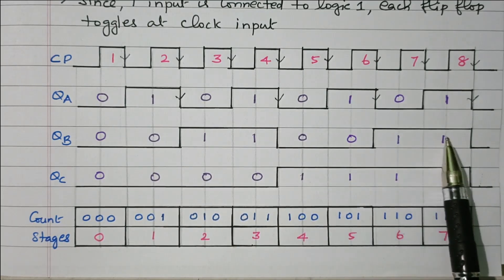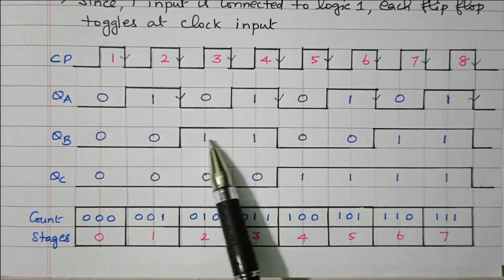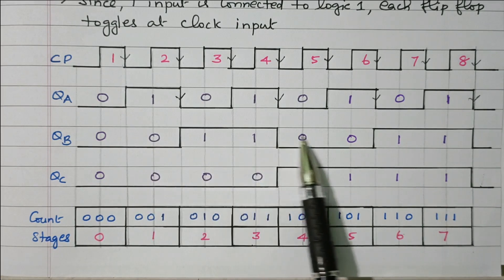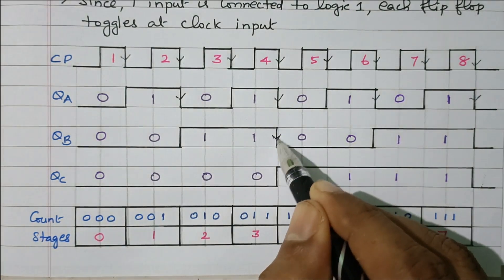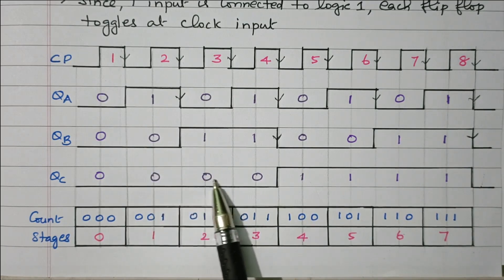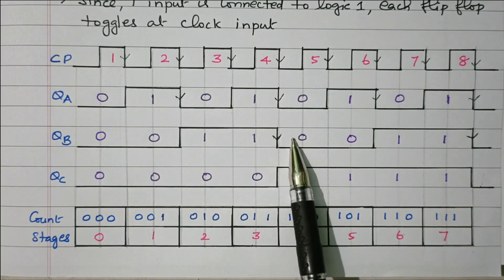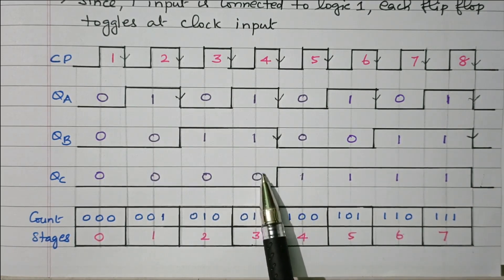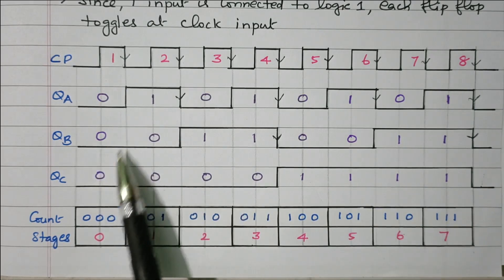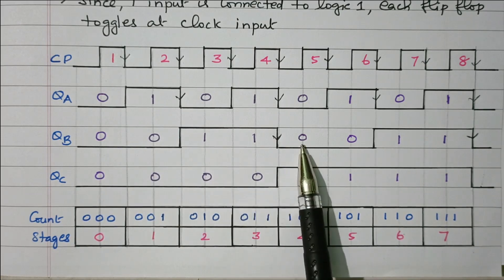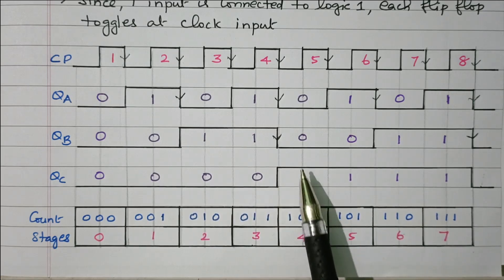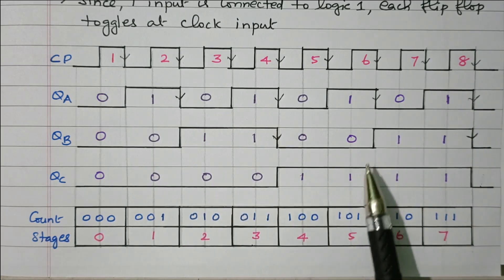During every trailing edge there is a change in QB's state. For the third flip-flop, QB is the clock pulse for QC. During the trailing edge of QB, QC will toggle. When QB is 0 after inversion 1 is applied so QC changes; when QB is 1 after inversion 0 is applied so no change. During every trailing edge of QB, QC toggles; during positive edges there is no change.